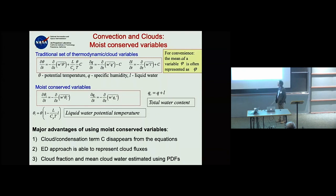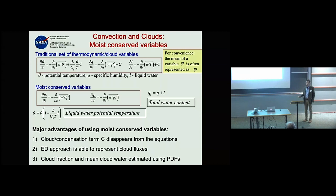Moist conserved variables are variables that don't change when you have phase transitions — evaporation or condensation. This simplifies the system to just two equations: liquid water potential temperature and total water content.